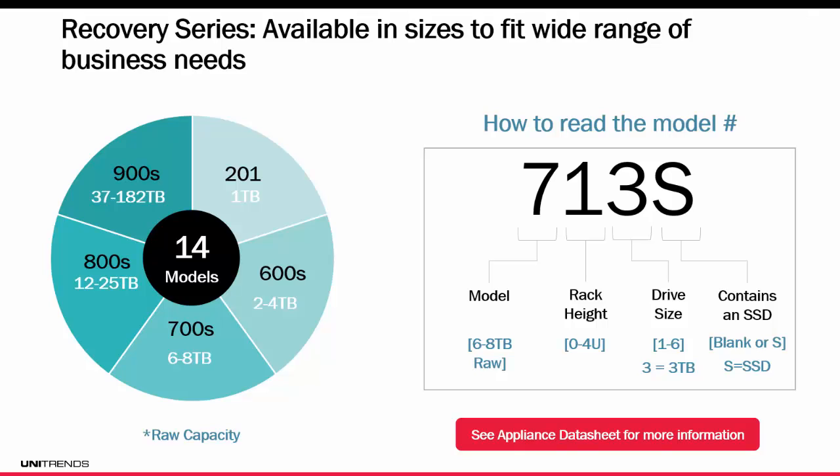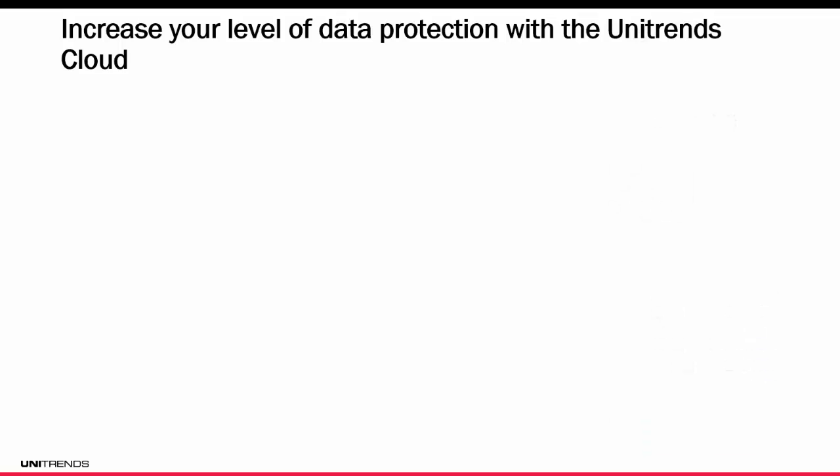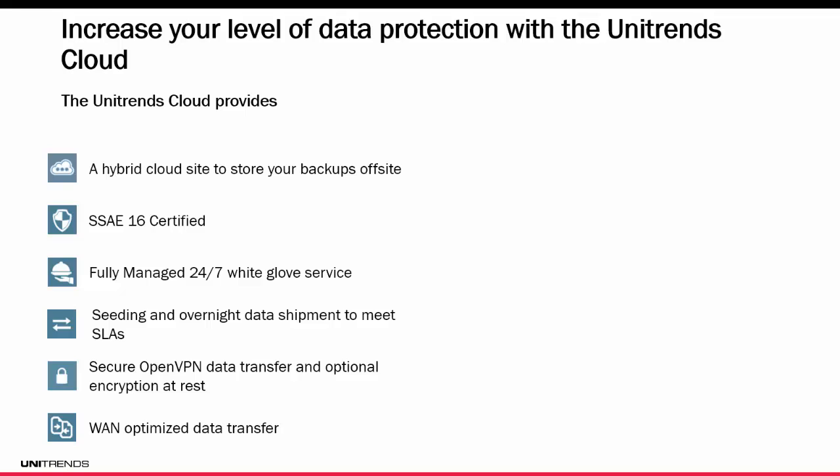Now that we've talked about our two data protection platforms, let's talk about how you can increase your level of data protection with the Unitrends cloud. Not all business continuity strategies need to utilize the cloud, but if you do, Unitrends is a great offering to help you accomplish that. The Unitrends cloud provides a hybrid cloud site to store your backups off-site. It has a secure SOC 2 certified location that's fully staffed 24x7 with a white glove service. Our cloud offers data seeding services so you don't have to replicate all your data across the internet, and we offer overnight data shipment to meet SLAs. Secure WAN-optimized data transfer is available, and optional AES-256 encryption for data at rest is also a possibility.